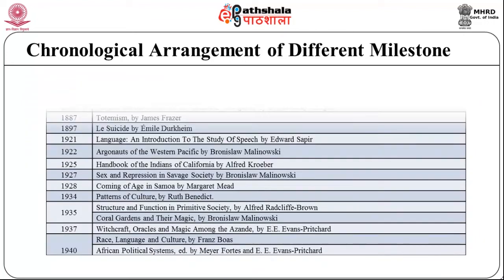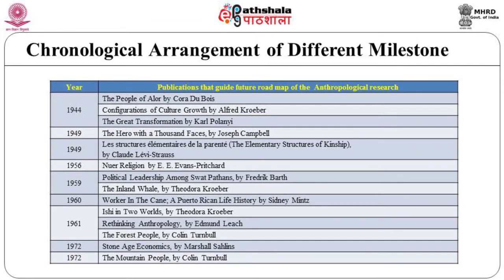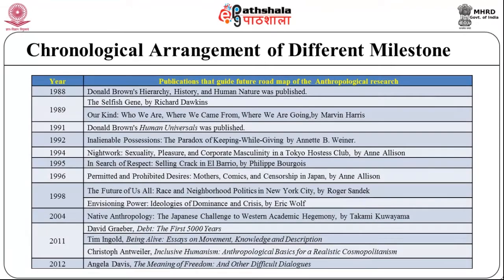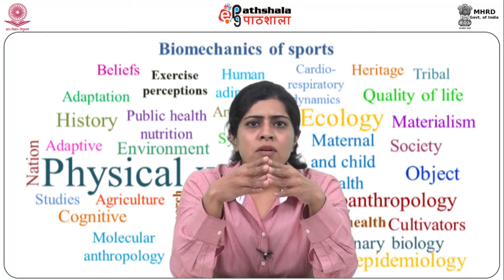You can see the various major findings in the field of anthropology in this table from 1873 to 2015. In the next table, you can see a few path-breaking publications that directed the future pathway of anthropological research and development from 1881 to 2012. These include Argonauts of the Western Pacific by Malinowski (1922), Handbook of the Indians of California by Alfred Kroeber (1925), Structure and Function in Primitive Society by Radcliffe-Brown (1935), Race, Language and Culture by Franz Boas (1940), The Elementary Structures of Kinship by Claude Lévi-Strauss (1949), Cows, Pigs, Wars and Witches by Marvin Harris (1974), Inclusive Humanism by Christopher Antweiler (2011), and The Meaning of Freedom and Other Difficult Dialogues by Angela Davis (2012).